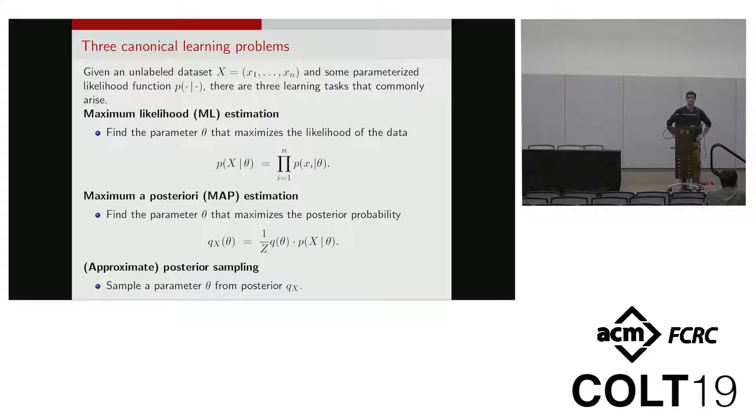The first one is maximum likelihood estimation, where we simply search for the parameter that maximizes the likelihood of our data. If we take a Bayesian approach and introduce a prior distribution over those parameters, this gives us a posterior. We could imagine trying to maximize this posterior density—that's MAP estimation—or because it's a distribution, we could imagine trying to actually sample from this posterior distribution.